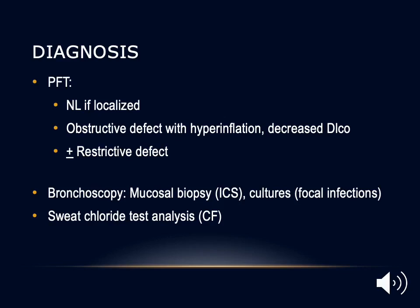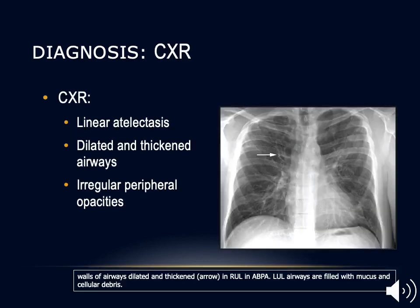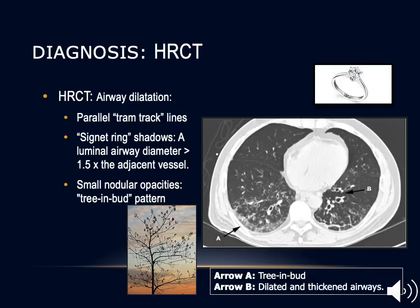Bronchoscopy with mucosal biopsy can be helpful in immotile cilia syndrome, and bronchoscopy can also obtain cultures in patients with focal infiltrates. Chest X-ray can show linear atelectasis, dilated and thickened airways with irregular peripheral opacities, and helps identify new infiltrates in patients with bronchiectasis superimposed by pneumonia. However, the characteristic findings of bronchiectasis cannot be well seen on plain X-ray.